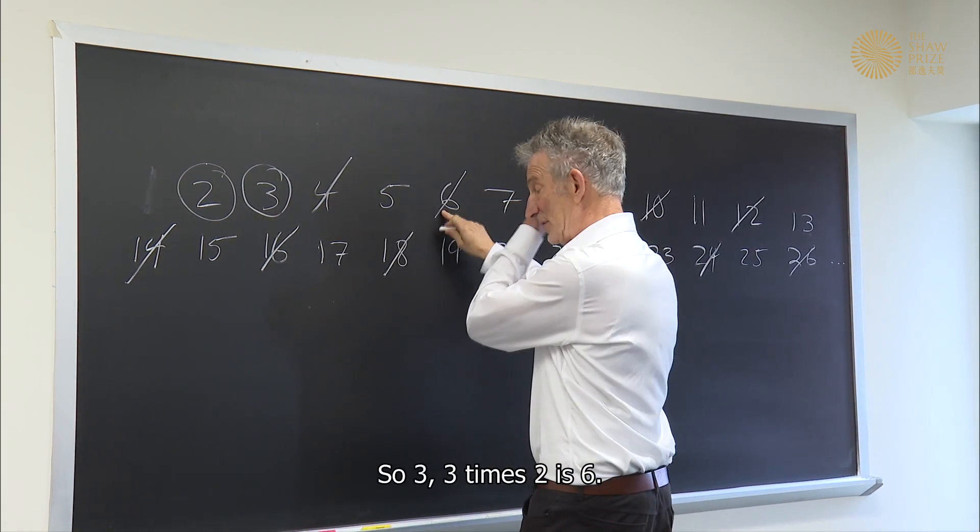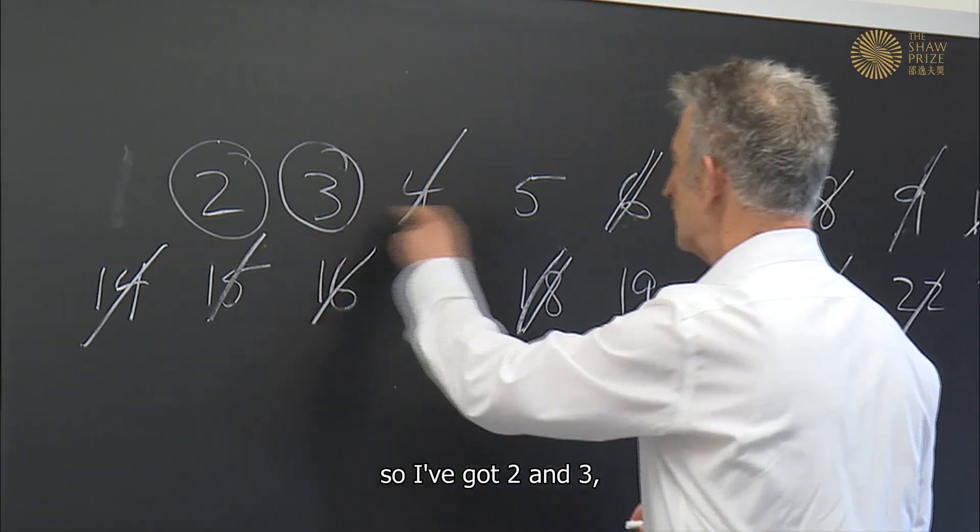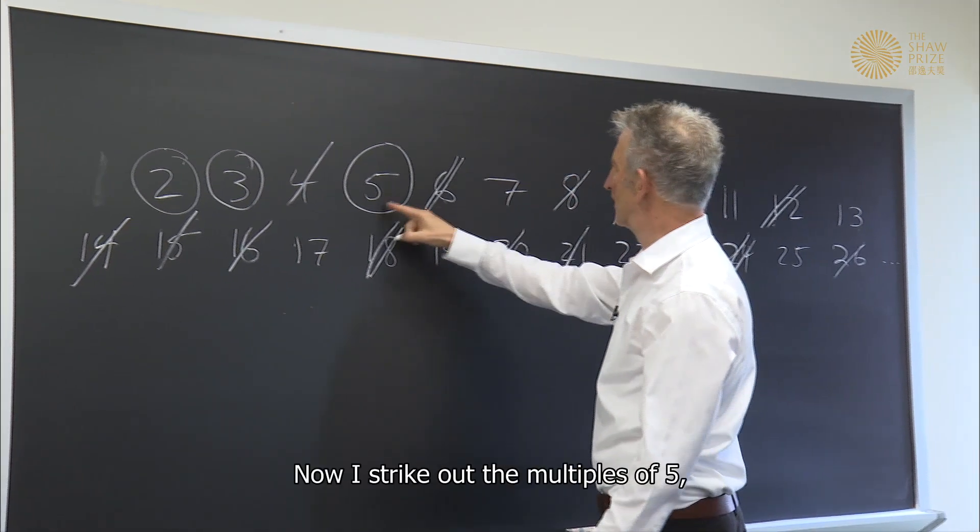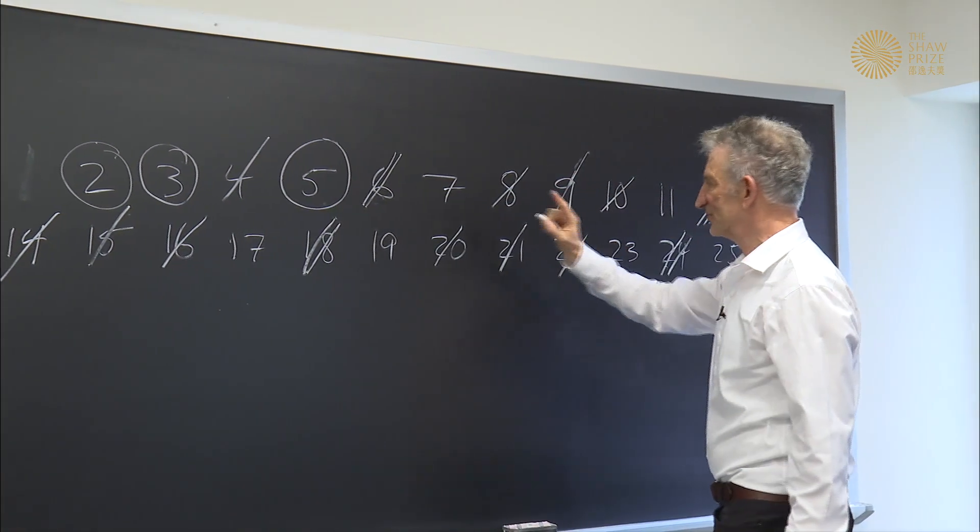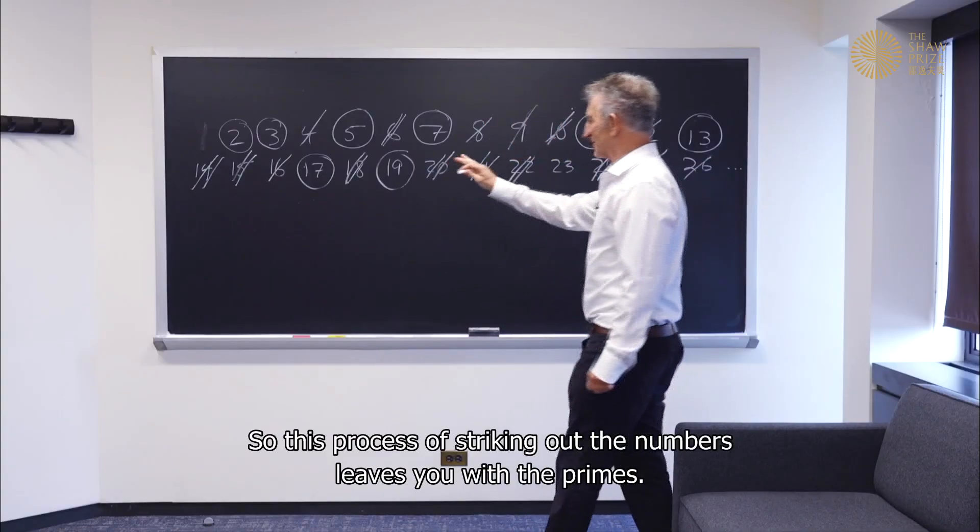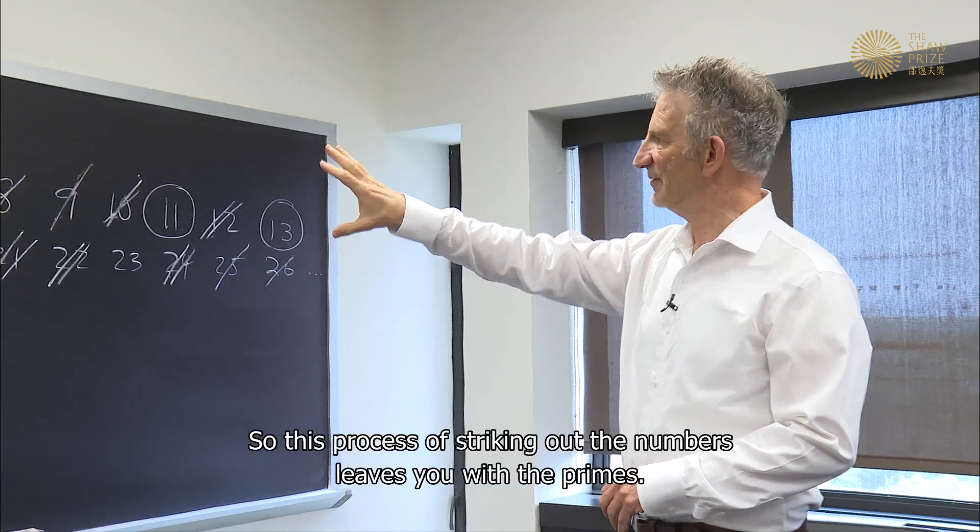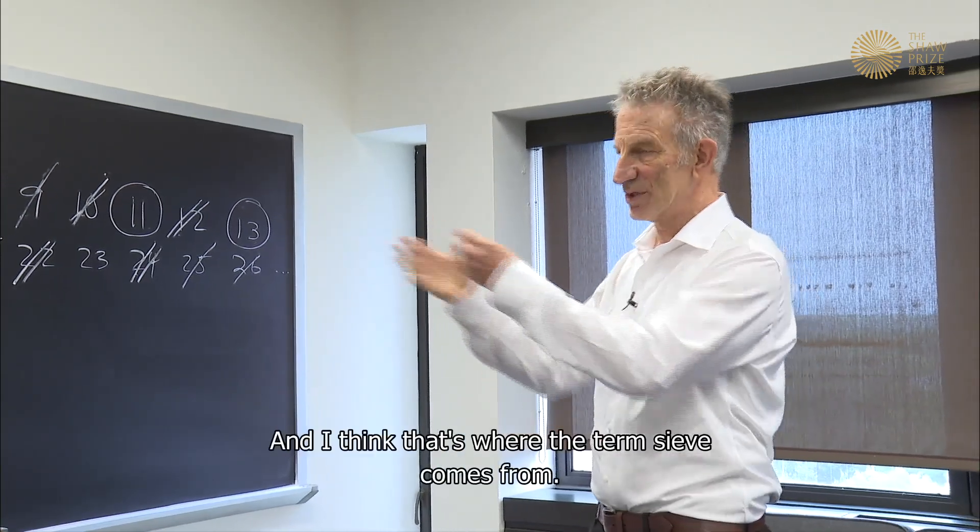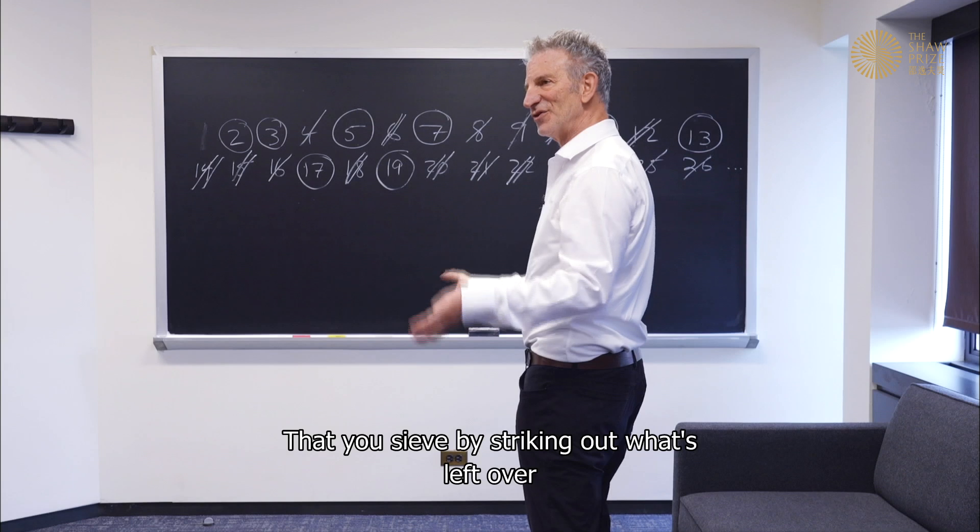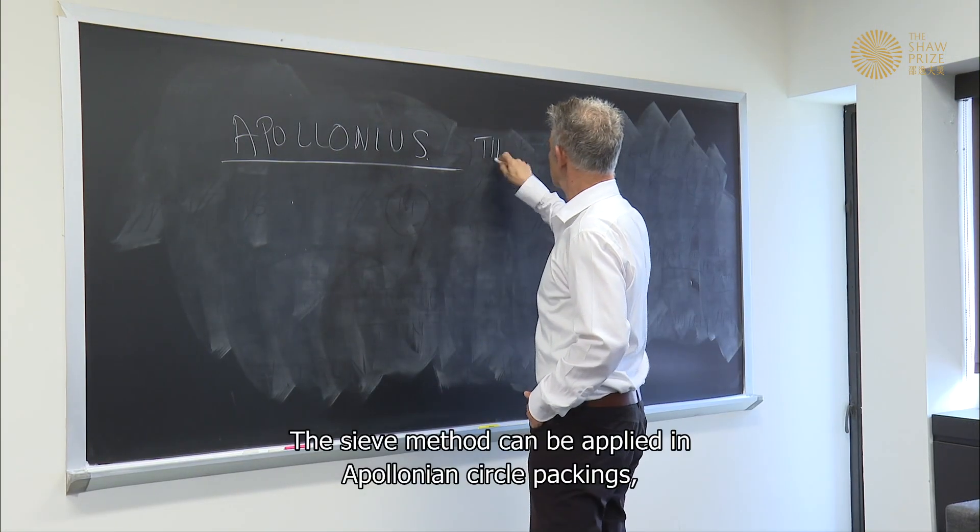Three, three times two is six. Now I go back to the beginning. So I've got two and three and the first number that I don't see is five. That's the next prime. Now I strike out the multiples of five. So that's five times two is ten. So this process of striking out the numbers leaves you with the primes. And I think that's where the term sieve comes from. That you sieve by striking out what's left over after you've done the sieve are the prime numbers.